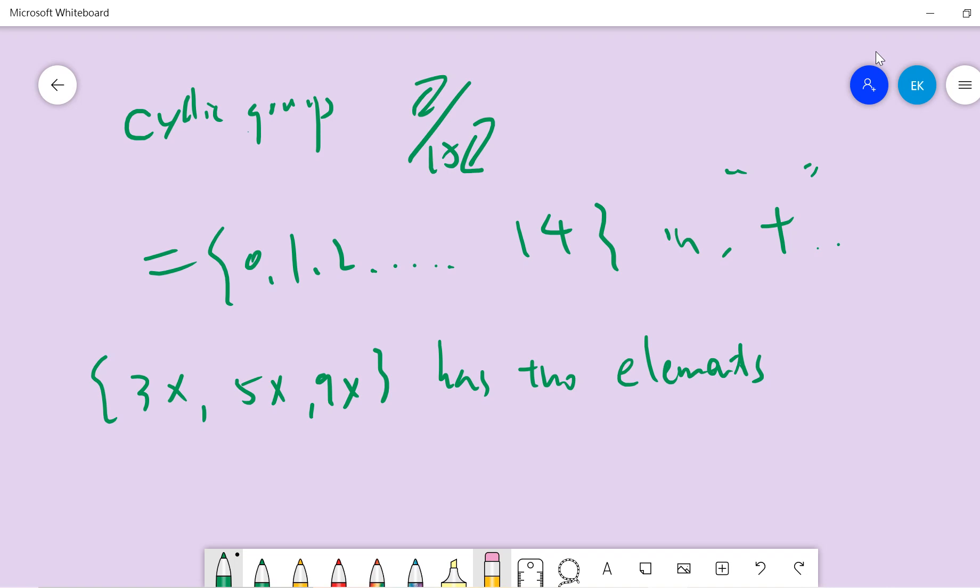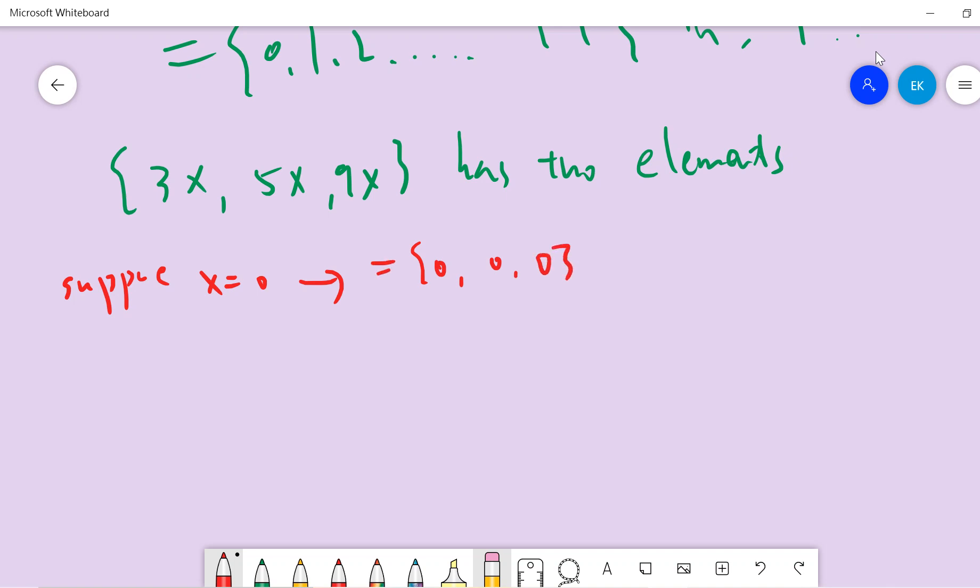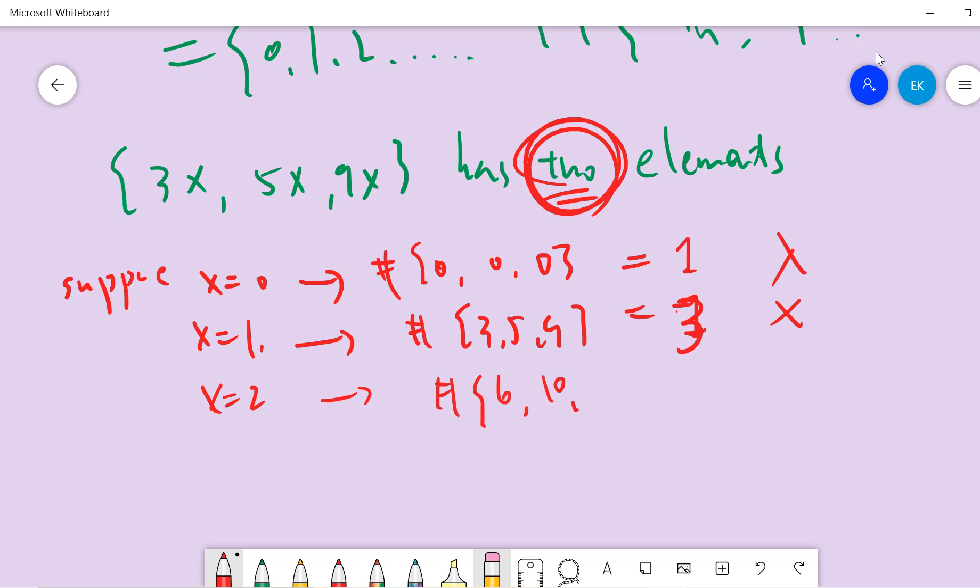That means two of three are the same. The goal is we first need to find what is x. Suppose x is 0, we have 0, 0, 0, so number is 1. For x equals 1, we have 3, 5, 9, which is 3 elements, so this is not okay because we need two elements. When x equals 2, you have 6, 10, and 18 modulo 15 is 3.